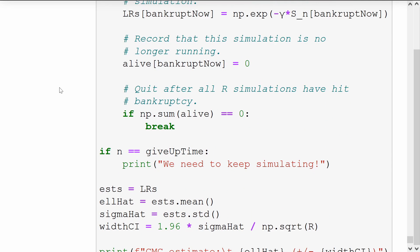We record that the replications which go bankrupt in this iteration won't be alive in future iterations. And check that if all of our scenarios have become bankrupt, we quit the loop.